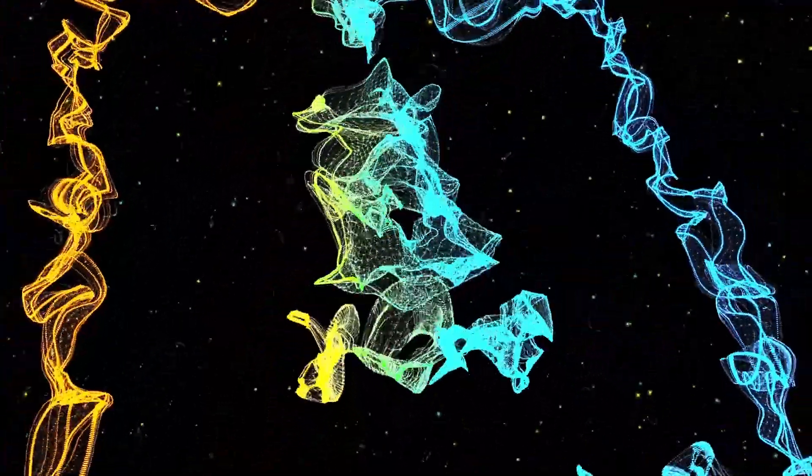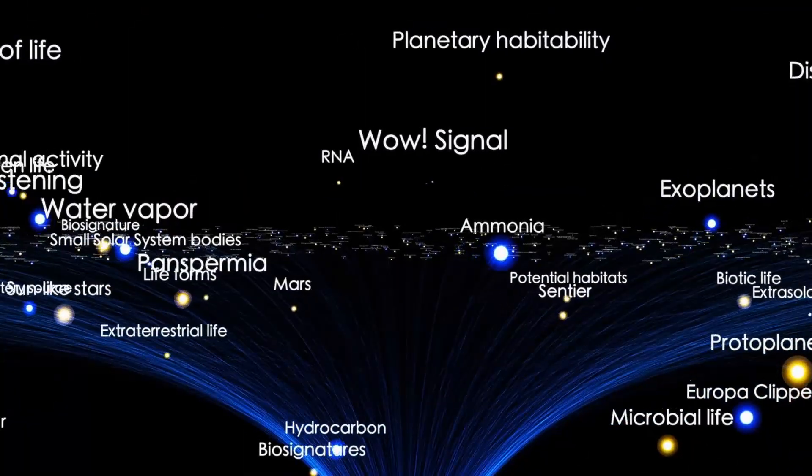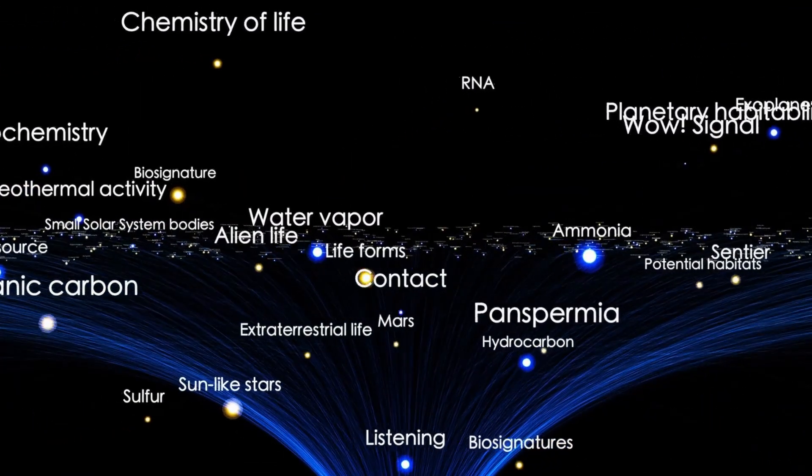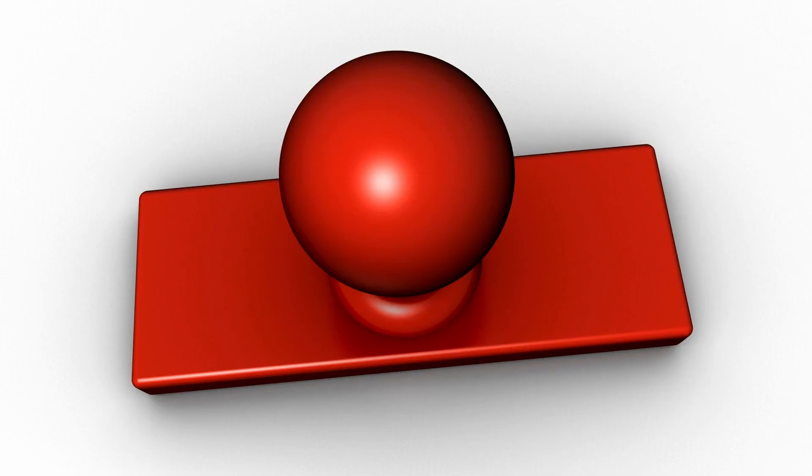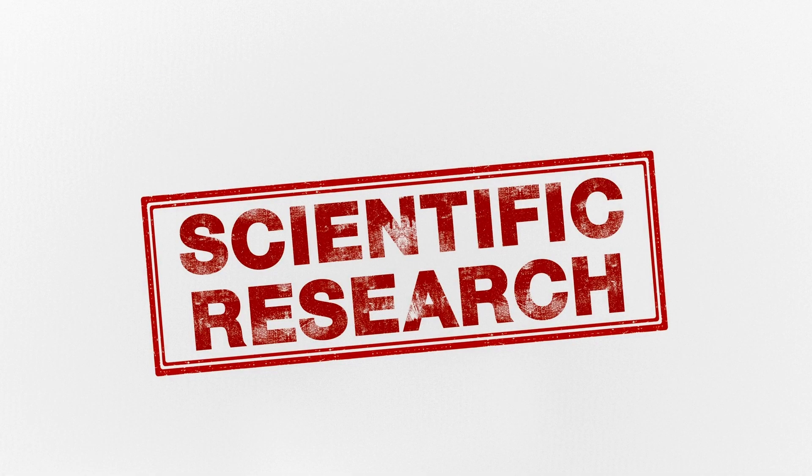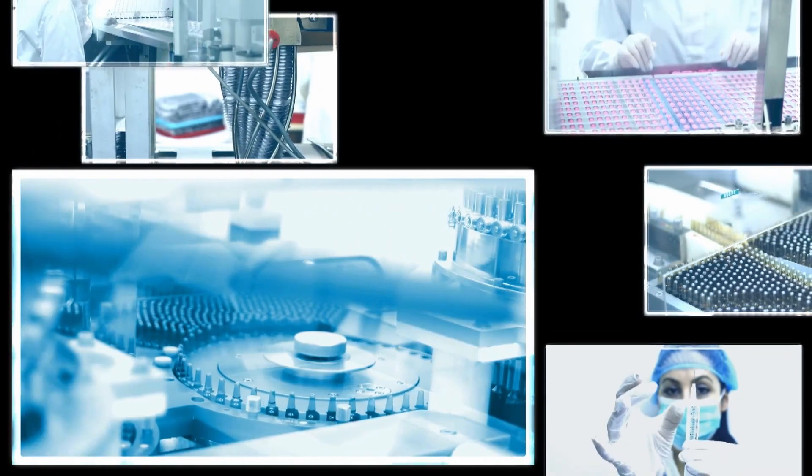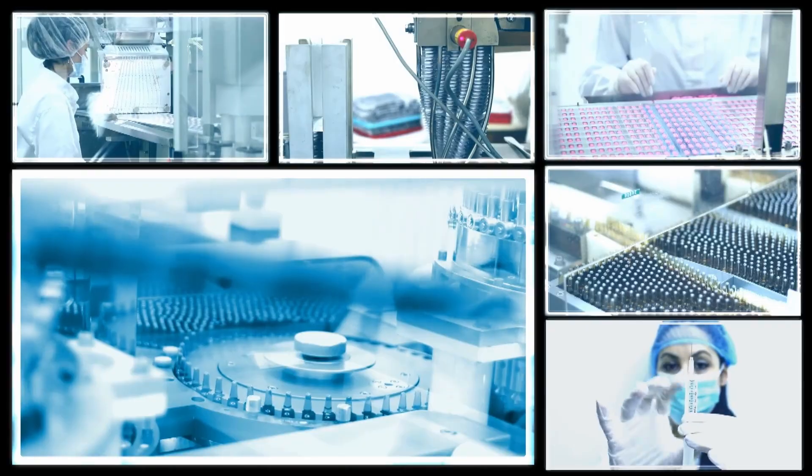The second layer is the photon sphere, which is the region where light orbits the black hole. Any light that enters this region will be trapped and unable to escape the black hole's gravitational pull. Finally, we come to the third layer, which is the singularity.